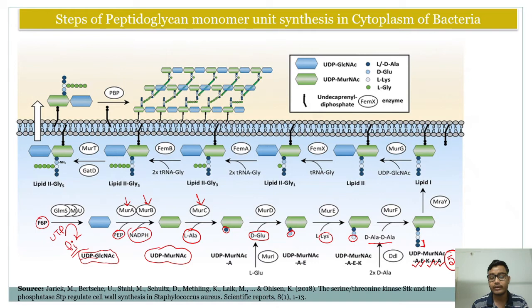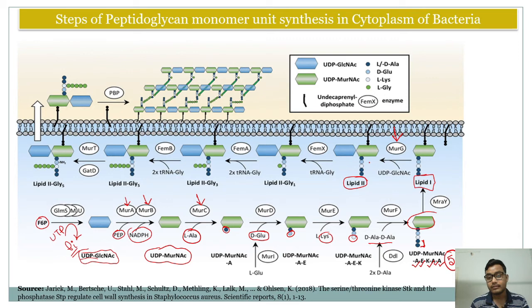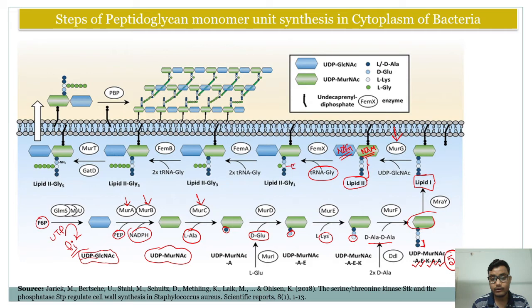These steps ultimately form UDP-N-acetylmuramic acid with five residues: alanine, glutamine, lysine, alanine, and alanine — the basic component of the gram-positive cell wall. This UDP-NAM with five amino acids is then converted into Lipid I, which is subsequently converted to Lipid II by the MurG enzyme, adding N-acetylglucosamine to the NAM component.